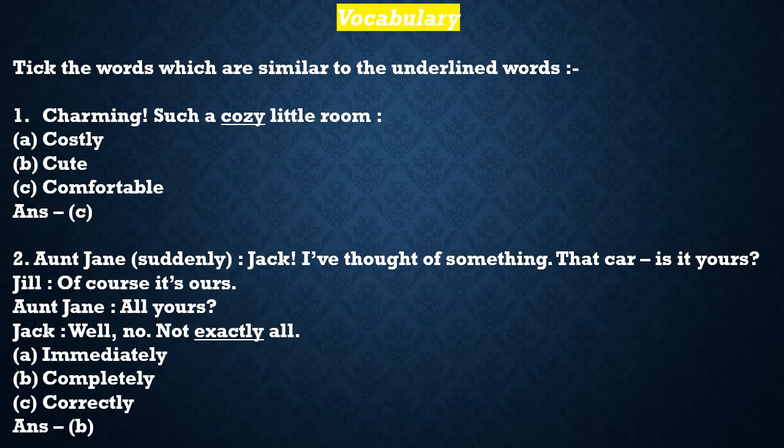Question 2: From the dialogue — Aunt Jen: 'That car, is it yours?' Jill: 'Of course it's ours.' Aunt Jen: 'All yours?' Jack: 'Well, no, not exactly all.' Find the similar word for exactly. Three options: immediately, completely, correctly. The correct answer is B — completely — puri tarah se. Question 3: 'Now tell me, how much do all these installments come to?' — find a similar word for installments. Installments means kisht. Options: loans, full payment, part payment. Correct answer is C — part payment.